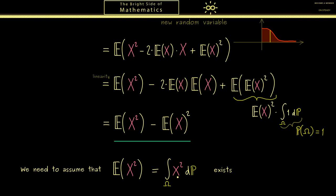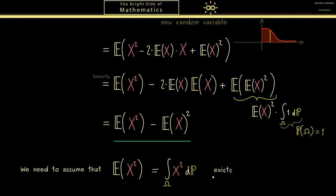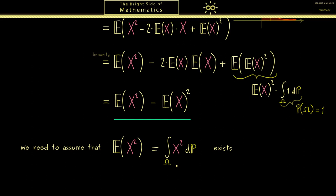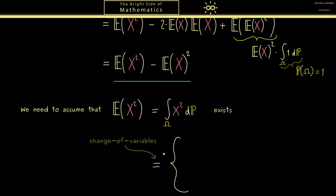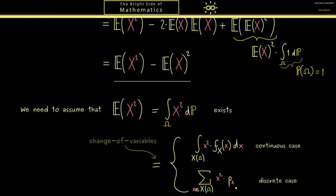If you don't want to deal with abstract integrals, we can do the same as for the normal expectation and go to the two important cases. The only ingredient needed is the change of variables formula, which lets us look at the continuous case and the discrete case easily. The only difference from the expectation is that now we have X squared inside; in the continuous case we use a PDF, and in the discrete case a probability mass function.